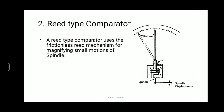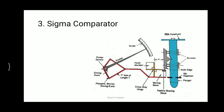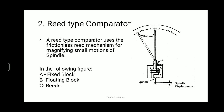This is again very similar to the previous one. Over here you can see there are points A, B, and C. Point A is fixed — it will not move in any case. Point B is the moving spindle, or you can say moving block, so it is a floating block. And C is nothing but the reed.